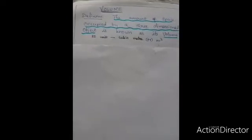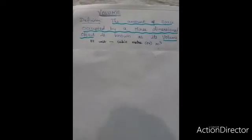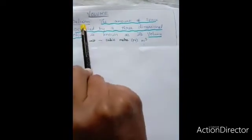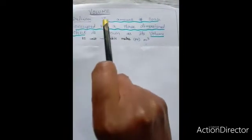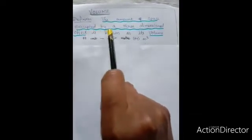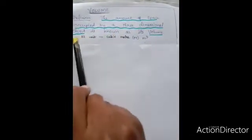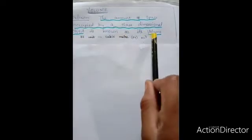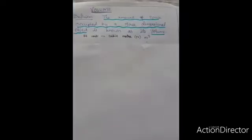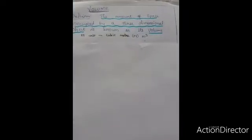Now, come to the topic volume. The definition for volume is the amount of space occupied by a three-dimensional object is known as its volume. I repeat it. The amount of space occupied by a three-dimensional object is known as its volume.